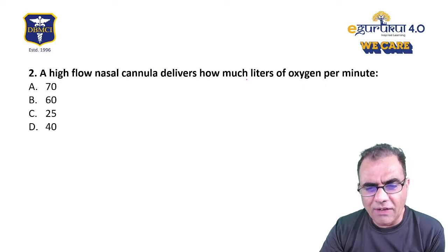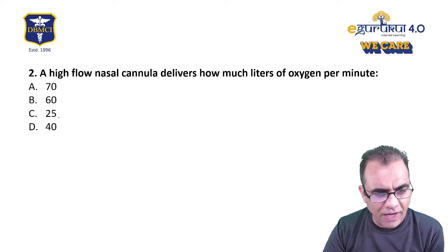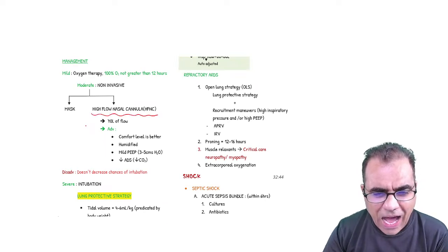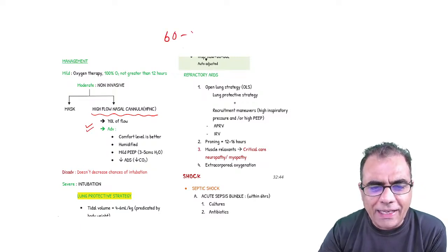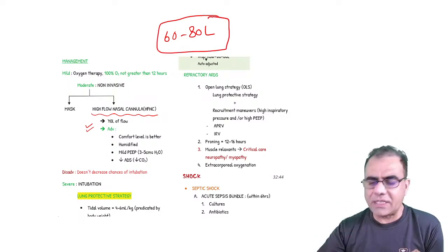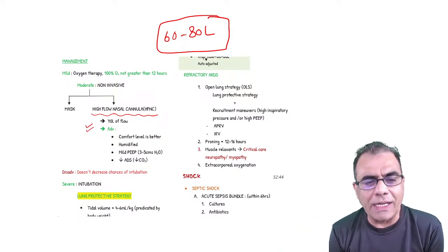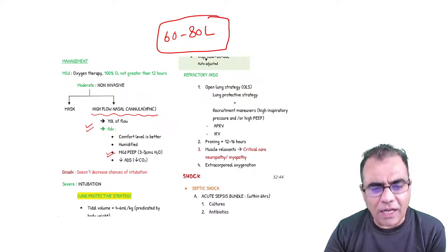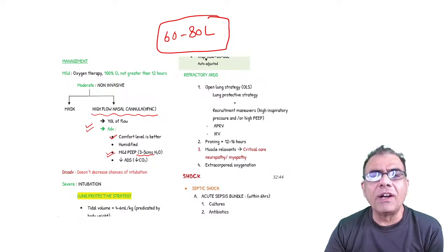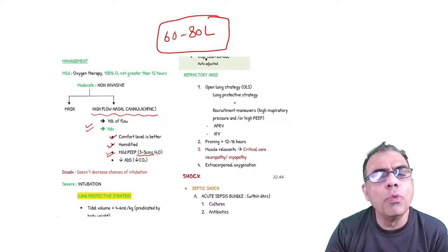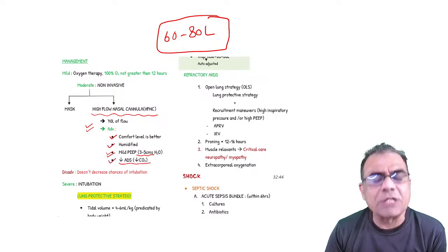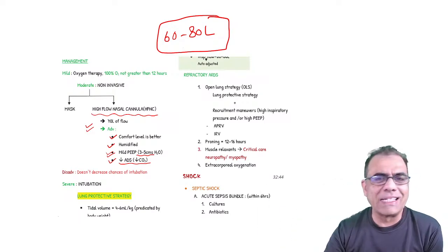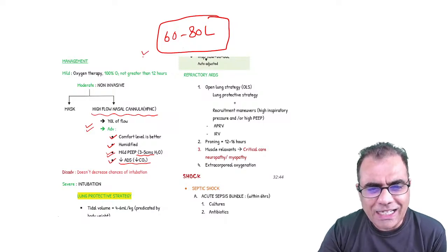Question number 2: A high-flow nasal cannula delivers how much oxygen per minute? Options: 70, 60, 25, 40. From the Igor Kul notes, high-flow nasal cannula delivers 60 to 80 liters. The advantages are: it produces mild positive end-expiratory pressure around 3 to 4 mmHg, patient comfort is better compared to non-invasive ventilation, gases are humidified, and it decreases anatomical dead space by replacing carbon dioxide — since the lungs are filled with such high flow of oxygen. So it provides 60 to 80 liters of oxygen.